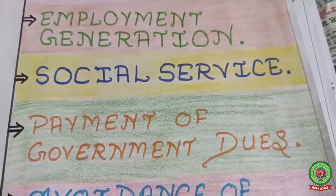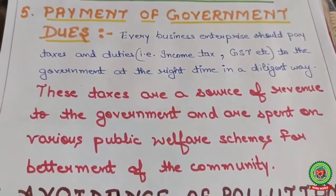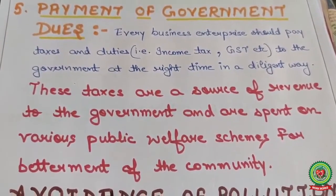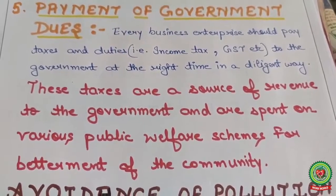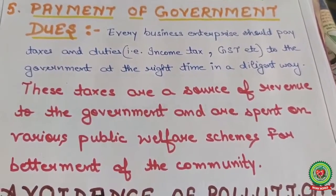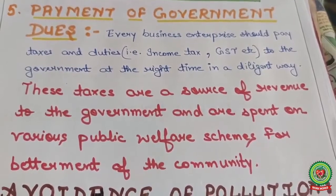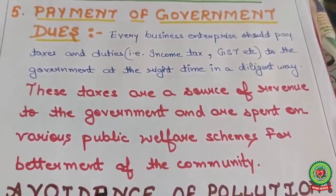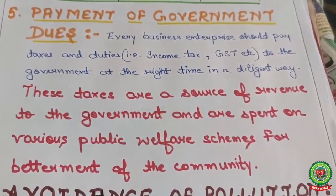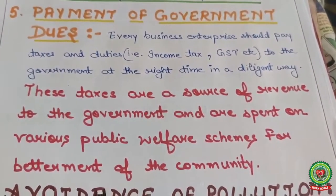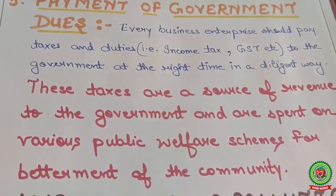The next social objective is payment of government dues. Every business enterprise should pay taxes and duties — income tax, GST, etc. — to the government at the right time and in a diligent way. These taxes are a source of revenue to the government and are spent on public welfare schemes for the betterment of the community, such as government hospitals, schools, colleges, and infrastructure like highways and roads.